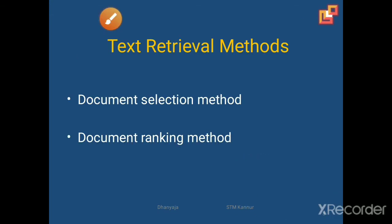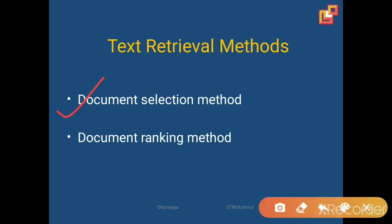Next is a text retrieval method. In text mining, for text retrieval, we are using mainly two methods: one is document selection and another is document ranking. These are the main methods used in text retrieval. Whatever document we require — the useful document for us — we will retrieve all those documents. We will consider either a document selection method or a document ranking method.